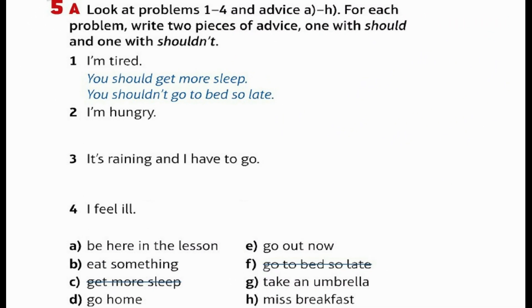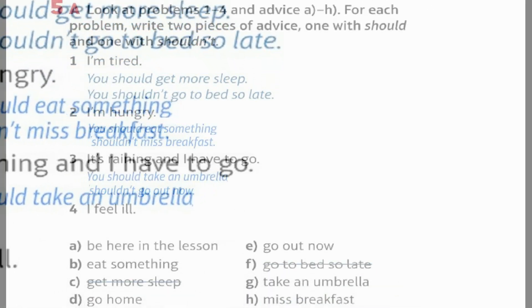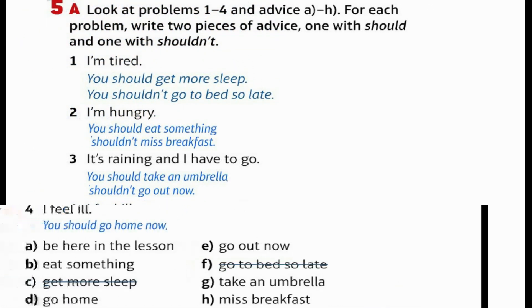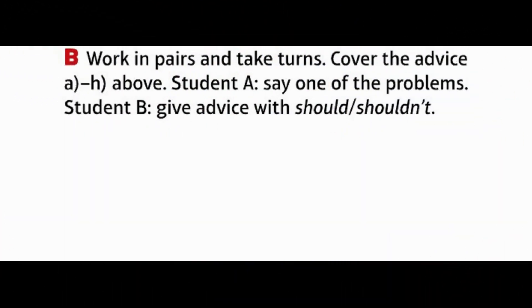Look at problems 1–4. For each problem, write two pieces of advice: one with 'should' and one with 'shouldn't'. 1. I'm tired. – You should get more sleep. You shouldn't go to bed so late. 2. I'm hungry. – You should eat something. You shouldn't miss breakfast. 3. It's raining and I have to go out. – You should take an umbrella. You shouldn't go out now. 4. I feel ill. – You should go home. You shouldn't be here in the lesson. Work in pairs and take turns: cover the advice, Student A says the problem, Student B gives advice with should/shouldn't.